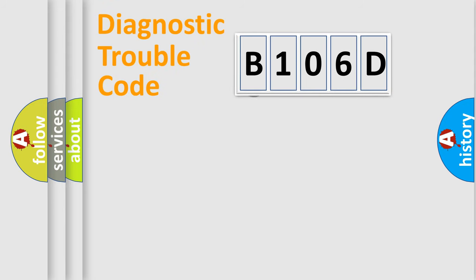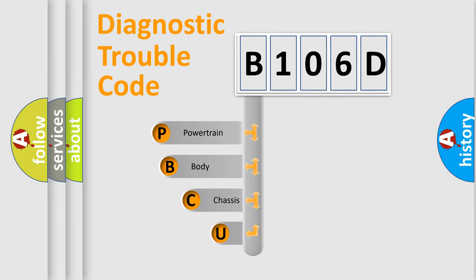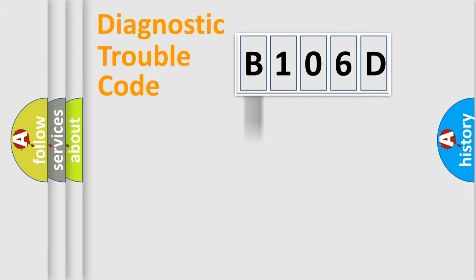First, let's look at the history of diagnostic fault code composition according to the OBD2 protocol, which is unified for all automakers since 2000. We divide the electric system of an automobile into four basic units: Powertrain, Body, Chassis, and Network. This distribution is defined in the first character of the code.